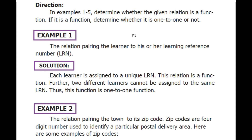In examples 1 to 5, we have to determine whether the given relation is a function. If it is a function, then we have to determine further whether it is one-to-one or not. Let's start with example 1.